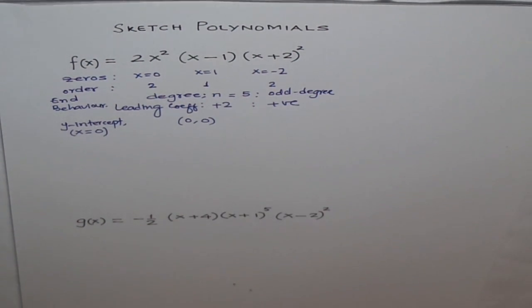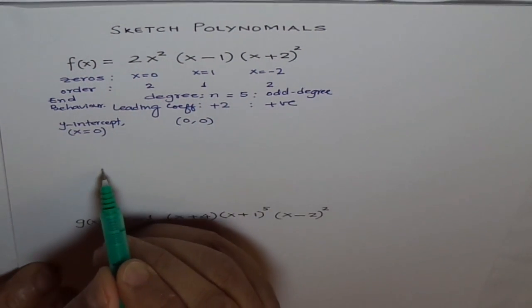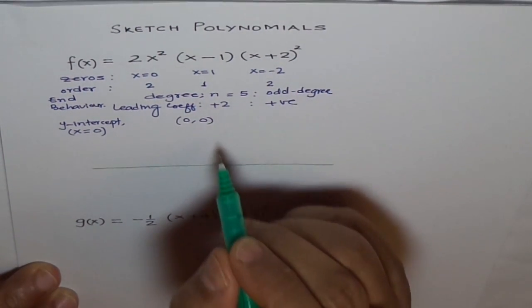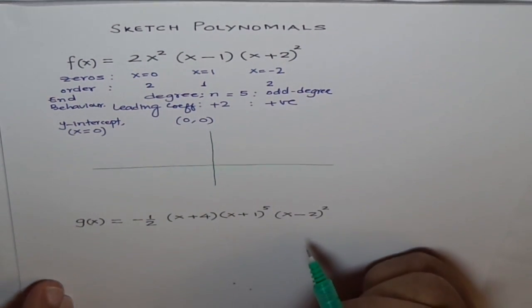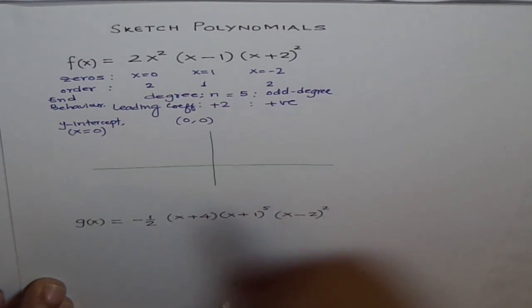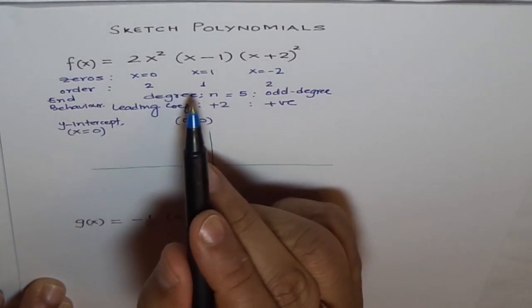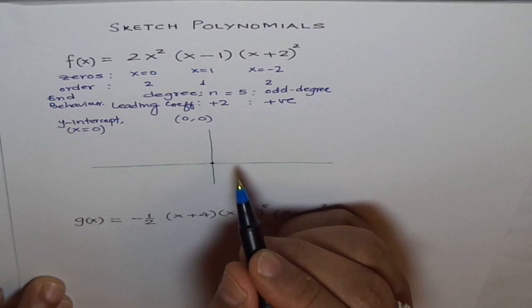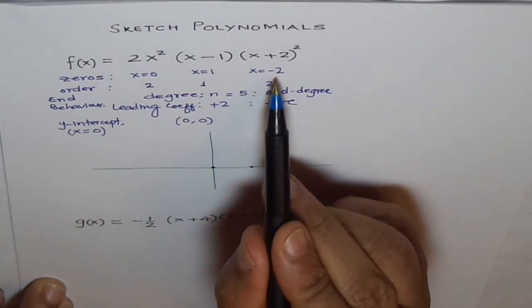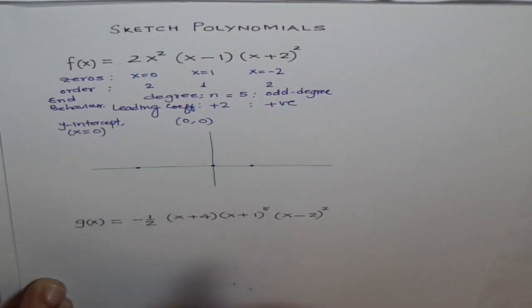Now, given all this information, it is very easy for us to sketch a graph. Let's do it. We will just draw our coordinate system. Let's say this is our zero. And now, let's place the zeros on this. One zero is at x equals zero. Second one at x equals 1. And the third one at x equals minus 2. So these are our zeros.